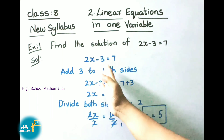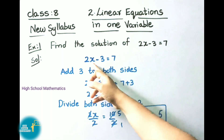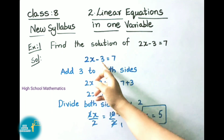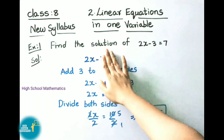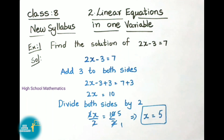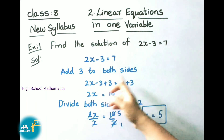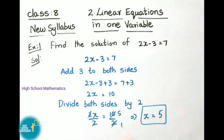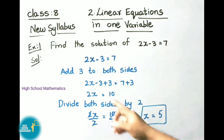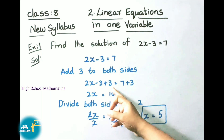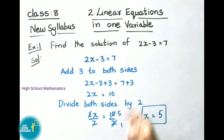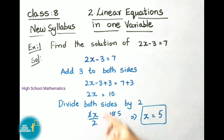On the left hand side, next to the x value, the number is minus 3, so we have to remove that value. For that reason we are adding 3 to both sides. So it becomes 2x minus 3 plus 3 equals to 7 plus 3. Here plus 3 and minus 3 will be cancelled, leaving only 2x, and that equals to 7 plus 3, which means 10.